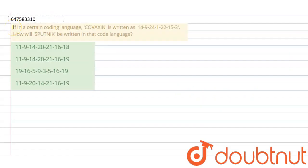Hello everyone, let's start the question. The question says, if in a coded language, Covaxin is written as 14, 9, 24, 1, 22, 1, 15, 3,